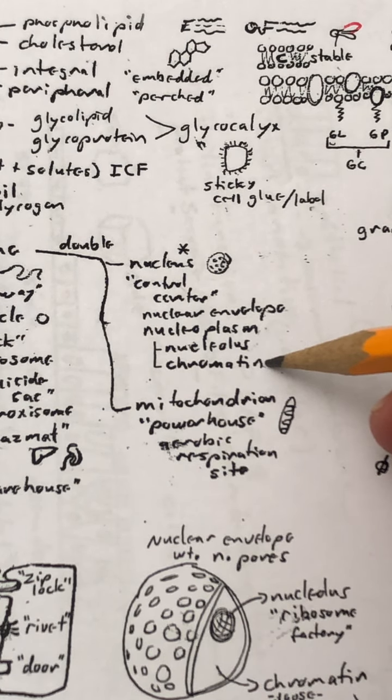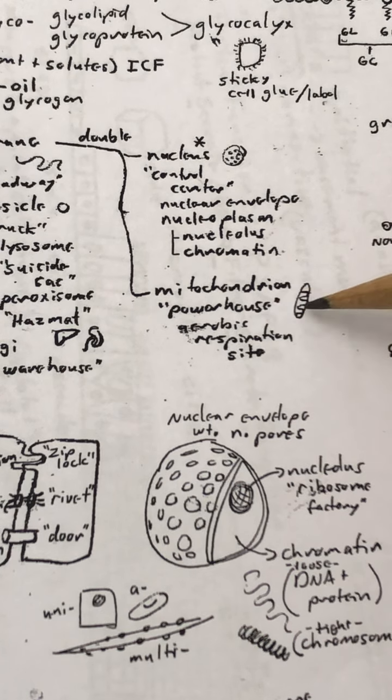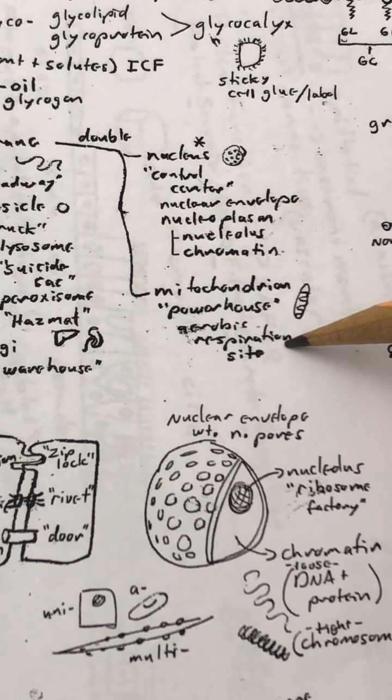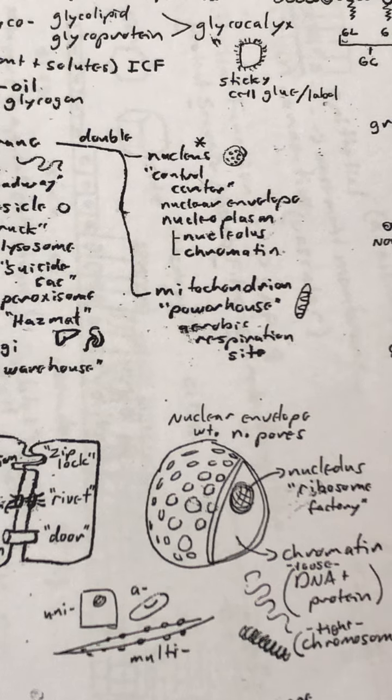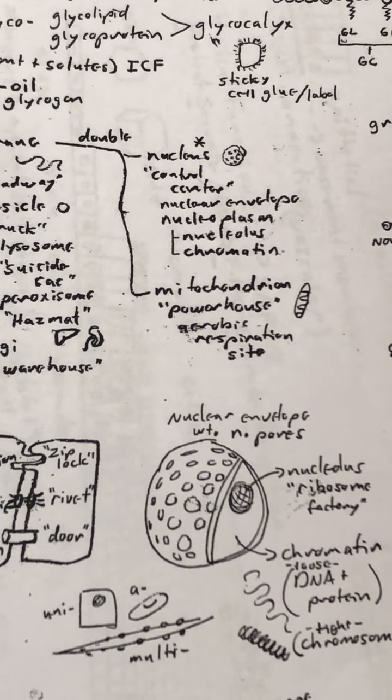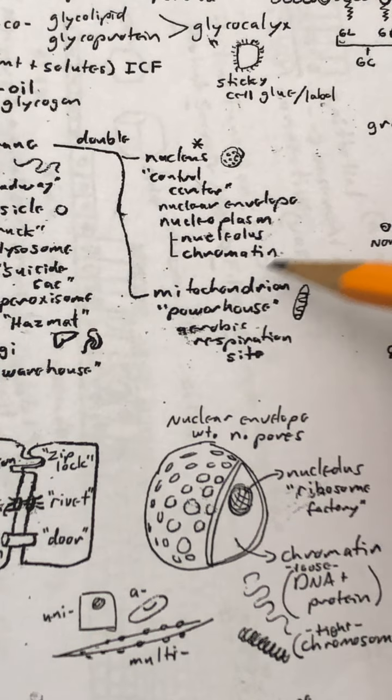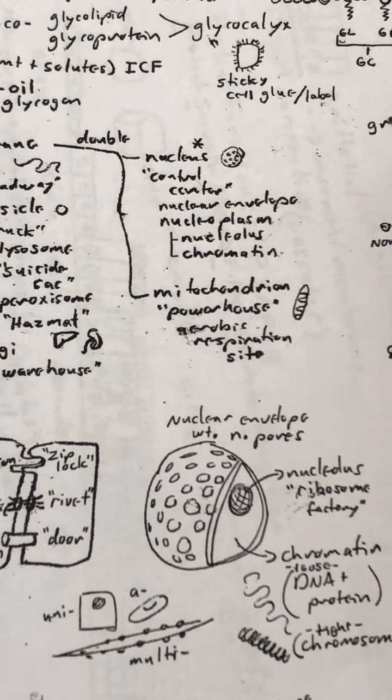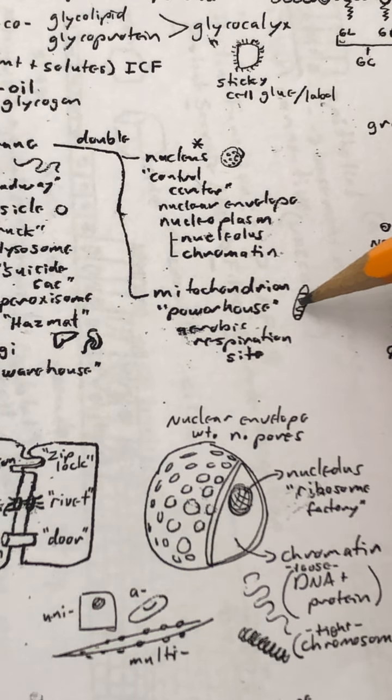The mitochondria, double layer. The nickname is the powerhouse of the cell. This is the main site of aerobic respiration, the place where the burning of glucose is completed. It started outside the mitochondria, but it's completed inside the mitochondria. This is the main source of most of the ATP produced in the cell. This is the place where the glucose is finally broken down to its last components of carbon dioxide and water.